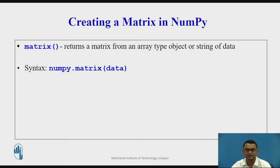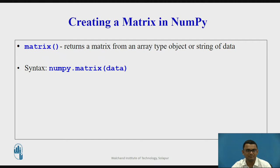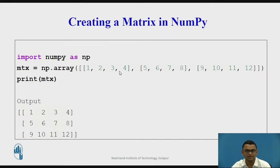We shall now see how to create a matrix using the NumPy library. The matrix function returns a matrix from an array-type object or a string of data. The syntax is numpy.matrix(), and the data is passed as a parameter to the matrix function. Here is an example of creating a matrix using the array function, passing the data you want to embed as a matrix.